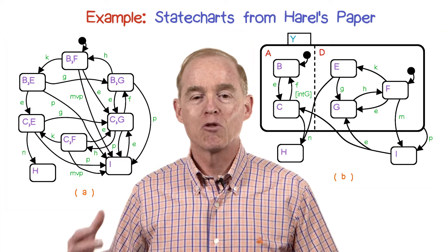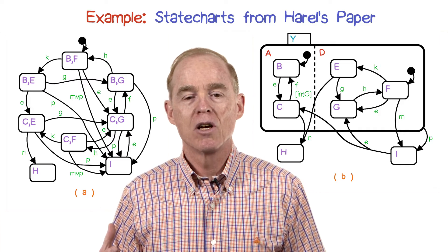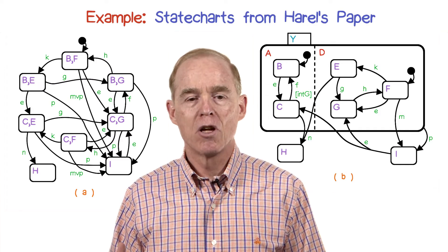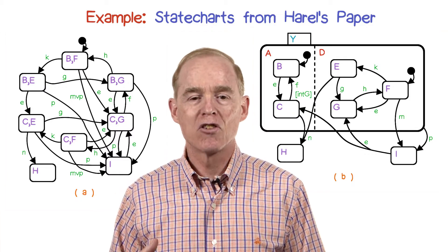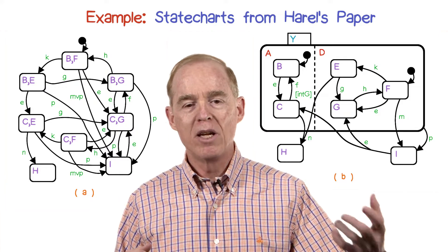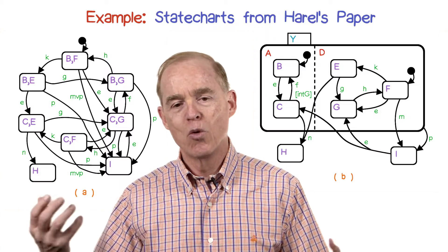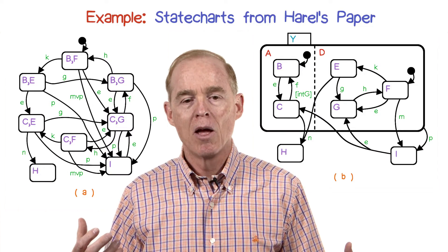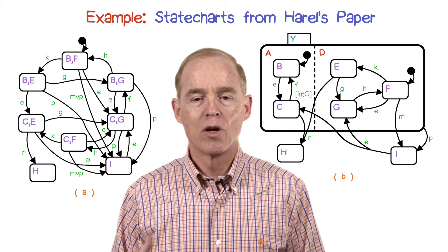Here's from Harrell's paper. On the left is the bowl of spaghetti that indicates the multiplicative combination. Notice the labels of the states are really indicating where you would be in one of the concurrent machines and where you would be in the other concurrent machine—hard to understand what's going on there.